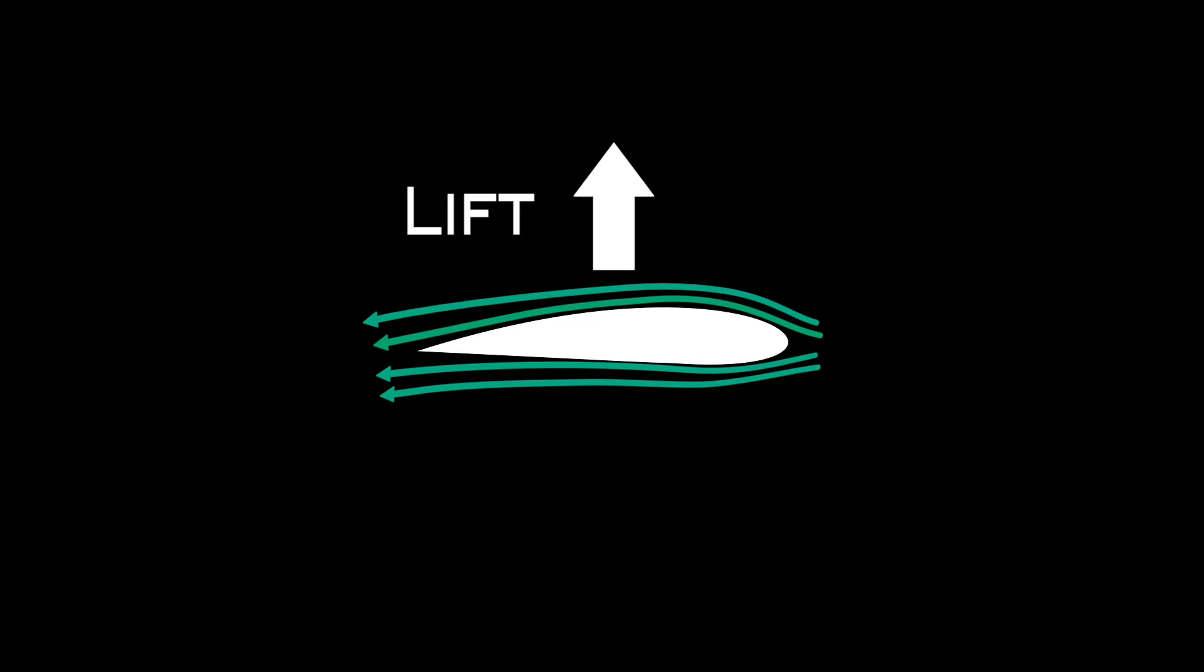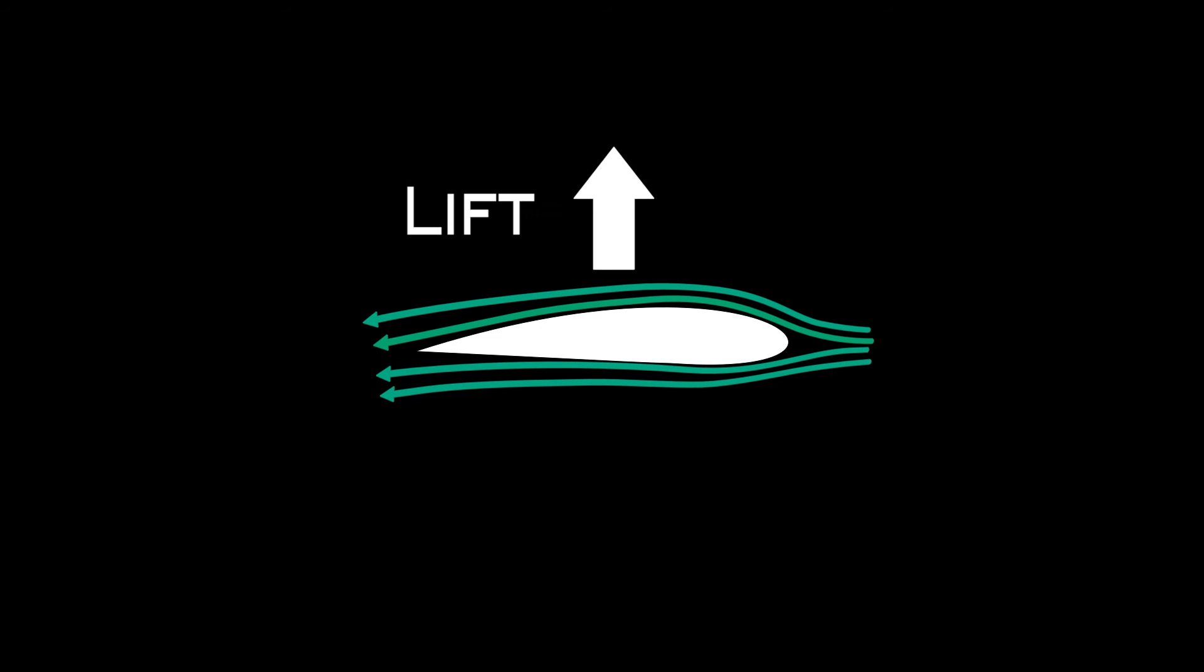Here we see a cross section of an airplane wing. The shape forces the air above the wing to move faster than the air below it. This creates an area of low pressure above the wing which results in lift.